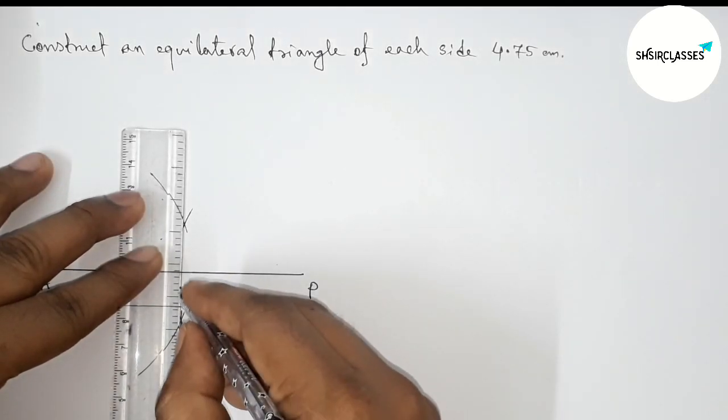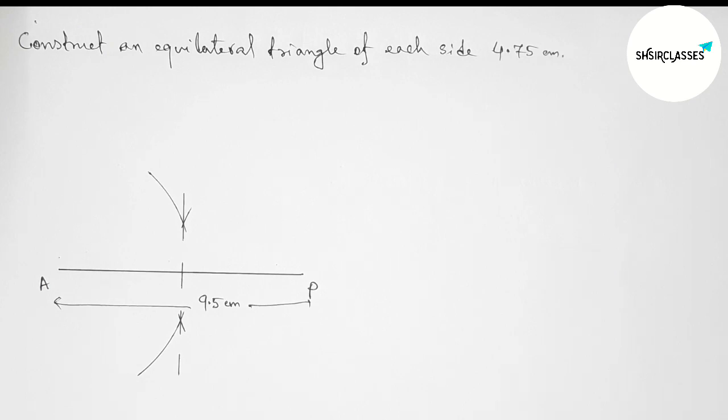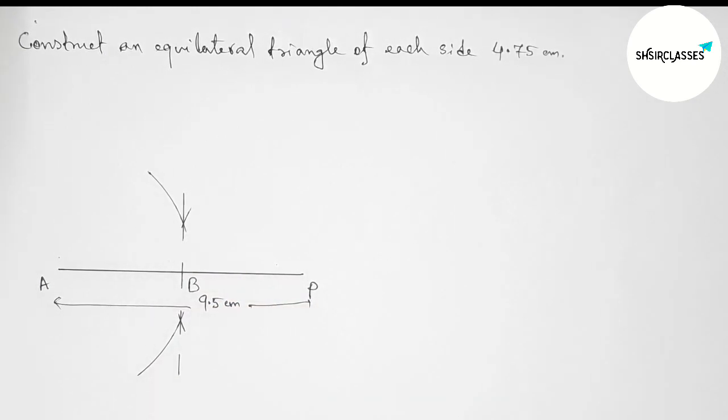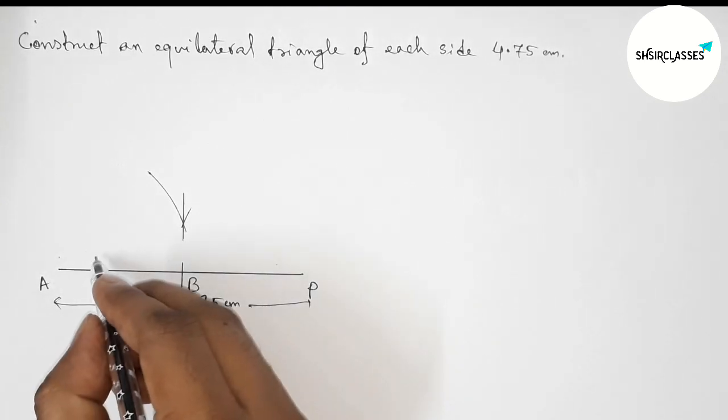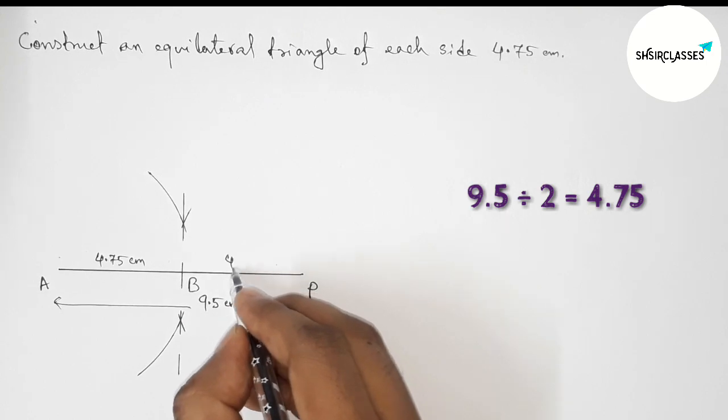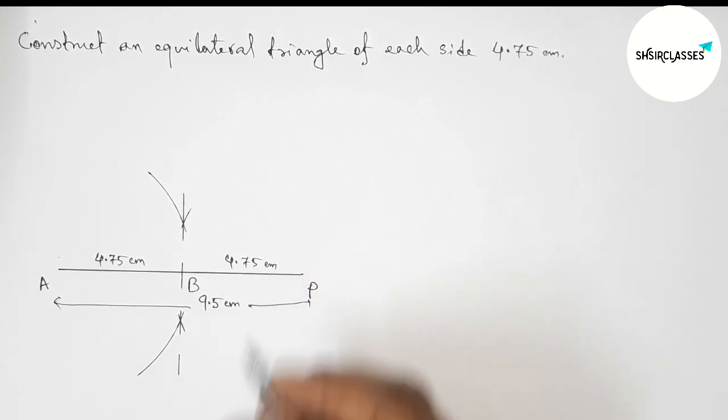Next, joining this line which bisects the line AP here at a point. So now taking here point B. Now AB is 4.75 centimeters and BP is 4.75 centimeters.